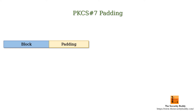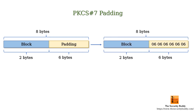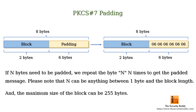Let's say the block length is 8 bytes and 6 bytes need to be padded. In that case we can add the byte 0x06 six times in the last block. In other words, if n bytes need to be padded we repeat the byte n times to get the padded message. Note that n can be anything between 1 byte and the block length, and the maximum size of the block can be 255 bytes.